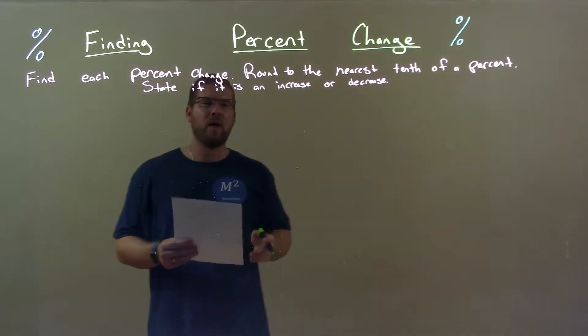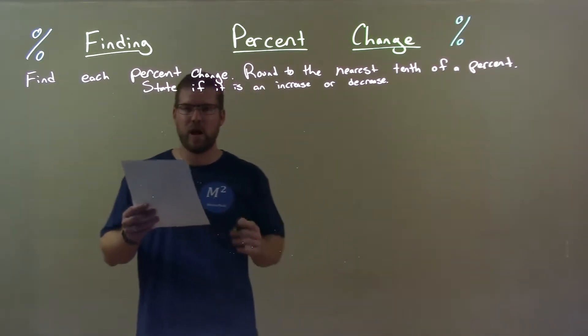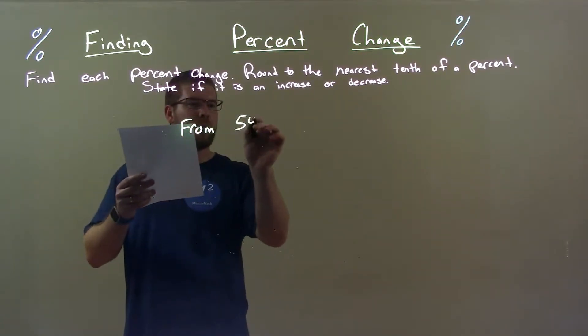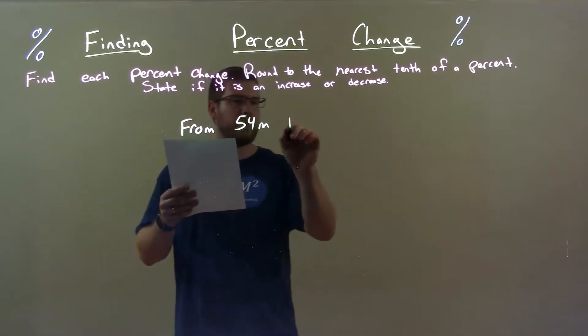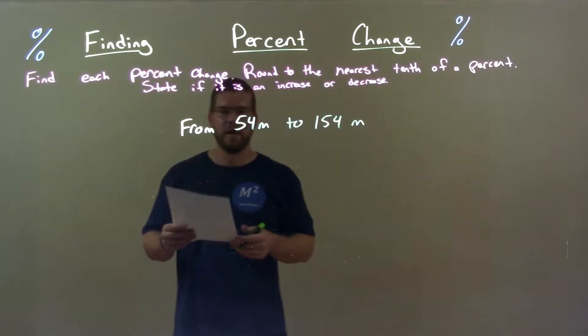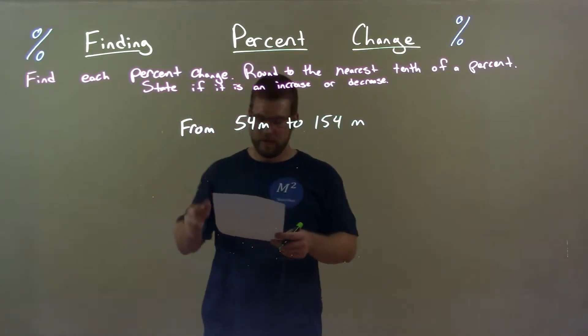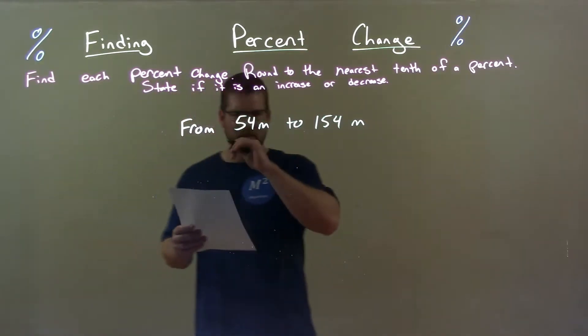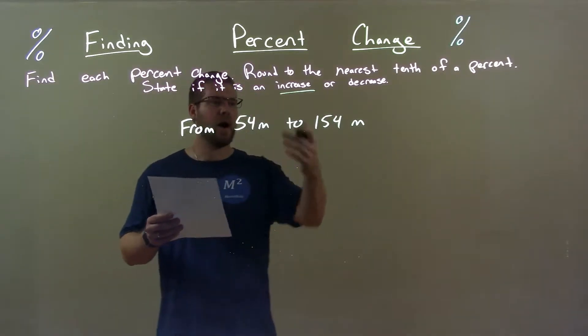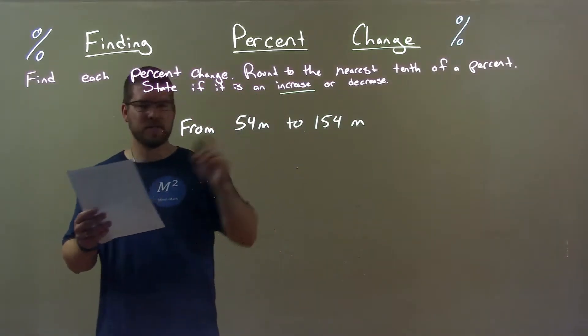So if I was given this problem from 54 meters to 154 meters, well this is clearly an increase, right? We're going up. So let's find that difference. Larger number 154 subtracted by the first number 54.